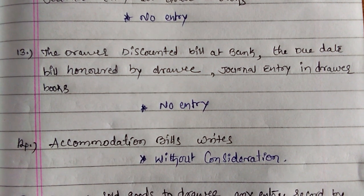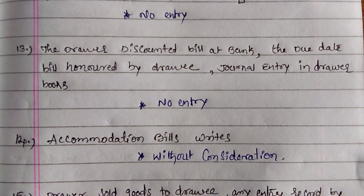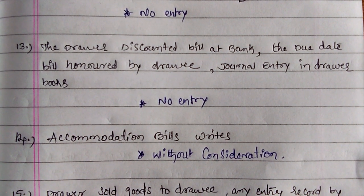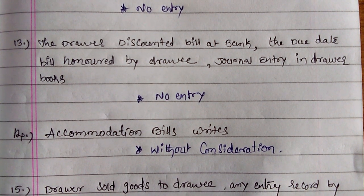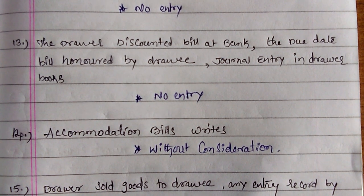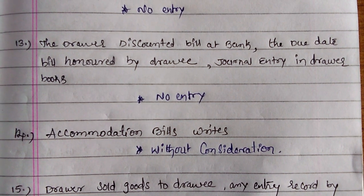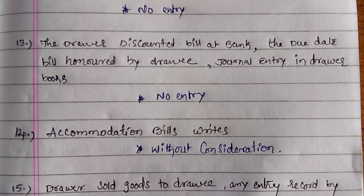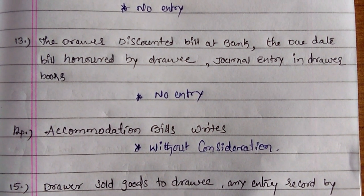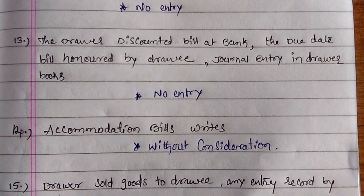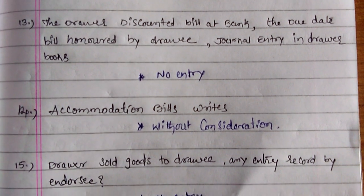Next: the drawer discounted a bill at bank, and on the due date the bill is honored by the drawee. The journal entry in the drawer's books — no entry. Why? Because the drawer already got the money, so on honoring, the bank will receive the cash. So no entry for the drawer's books.